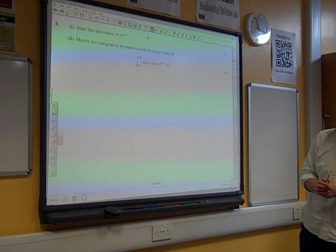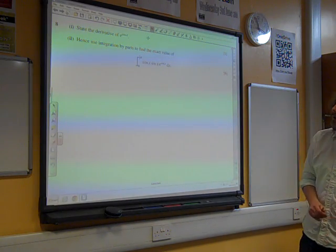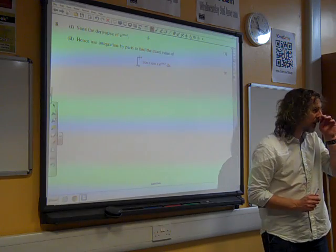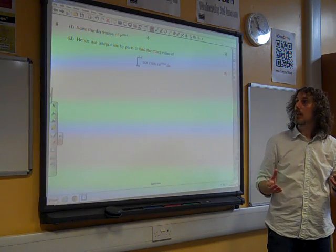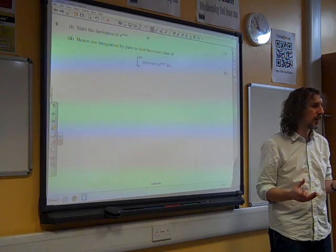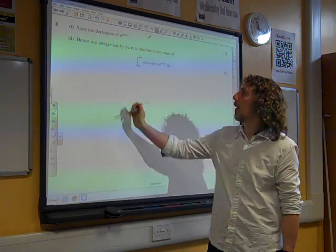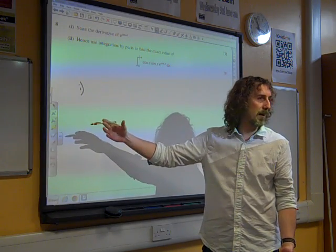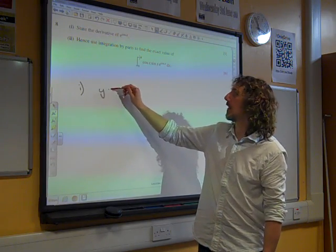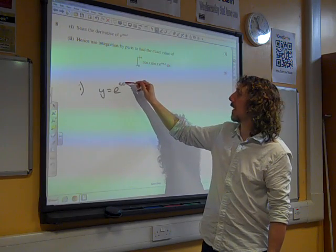So, question 8. We've got, as I say, one of these slightly weird bits where it feels like it's a little bit unconnected, so you have to state a derivative. So, let's just make the language of this a little bit easier for us. Let's say that y is e to the cos x.